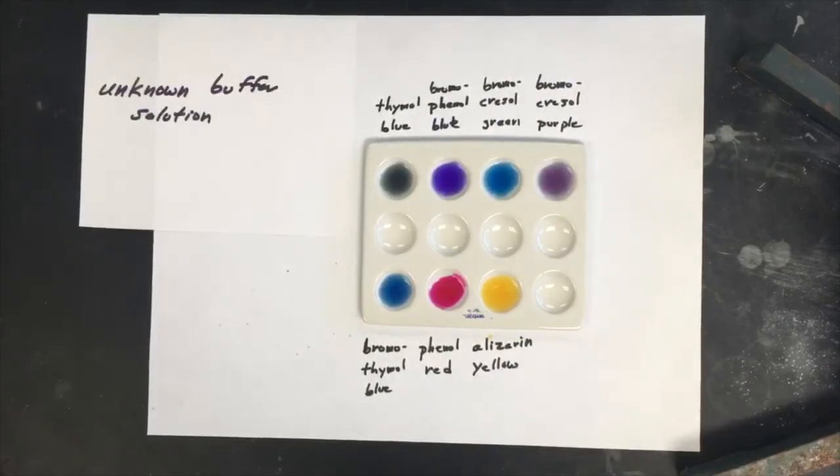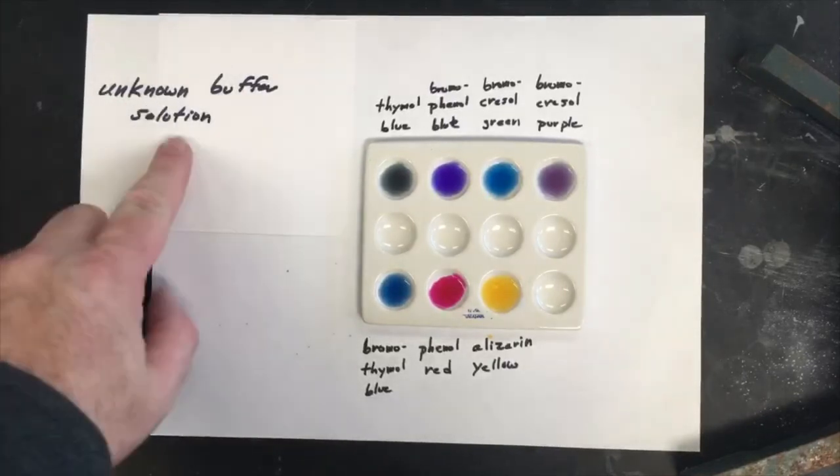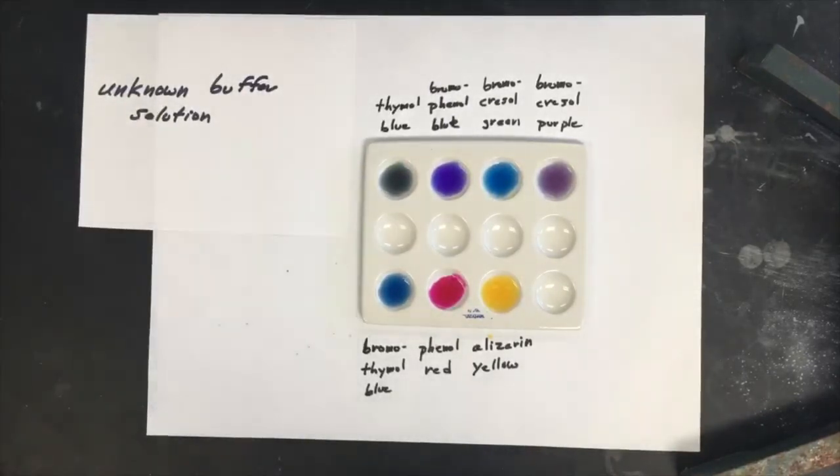Here's the last solution that we're going to try to determine the pH of using indicators. It's an unknown buffer solution. You don't have to determine what the buffer is, but need to estimate what the pH of the buffer solution is based off of the colors in these indicators.